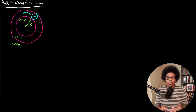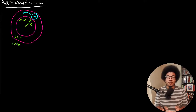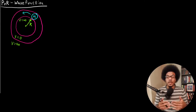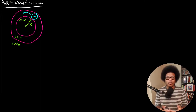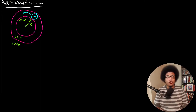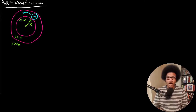In this video, we're going to derive the particle-on-a-ring wave function. In the previous video, we introduced the particle-on-a-ring problem — it's a particle on a two-dimensional ring, and we talked about how we would model this quantum mechanically.